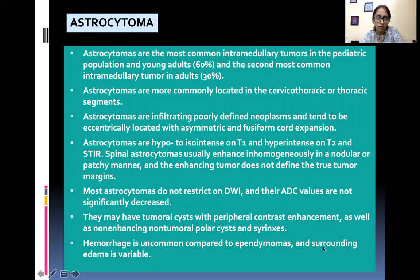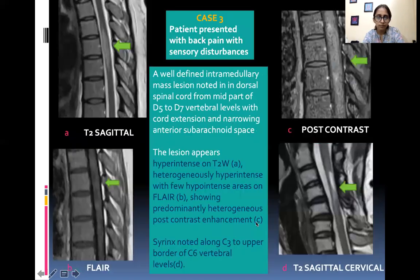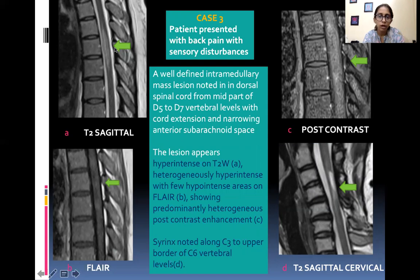Hemorrhage is uncommon in astrocytomas compared to ependymomas. Presenting a case of astrocytoma: patient presented with back pain and sensory disturbances. A well-defined intramedullary mass lesion is noted in the dorsal spinal cord from mid D5 to D7 vertebral levels with cord expansion and narrowing of the anterior subarachnoid space. The lesion appears hyper intense on T2, heterogeneously hyper intense on FLAIR, and shows heterogeneous post-contrast enhancement. Syrinx is also noted along C3 to upper border of C6.